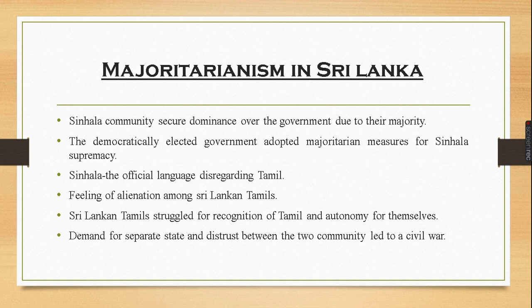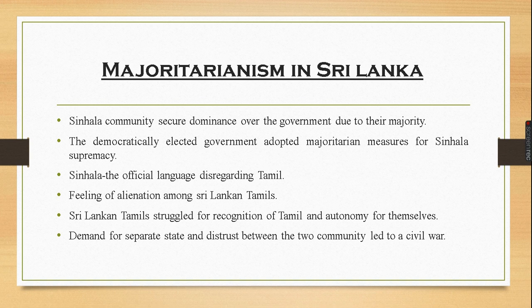They started demanding more autonomy into the provinces. By the 1980s, several political organizations were formed demanding an independent Tamil state in the north and eastern parts of Sri Lanka. Finally, the distrust between the two communities turned into a civil war. A civil war is a violent conflict between two opposing groups that takes place within a country — it becomes so intense that it appears like a war. Here, those two communities were the Sinhalas and the Tamils.